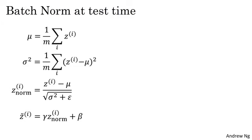Recall that during training, here are the equations you'd use to implement batch norm. Within a single mini-batch, you sum over that mini-batch of the z_i values to compute the mean. So here, you're just summing over the examples in one mini-batch. I'm using m to denote the number of examples in the mini-batch, not in the whole training set.